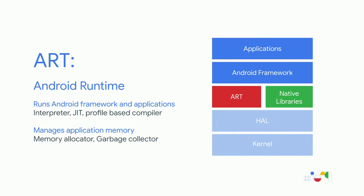ART is the software layer in between the Android operating system and the applications. It provides an execution environment for running both Kotlin and Java language applications on Android. ART does two things: it processes DEX files, the internal format of Android applications, through a hybrid model consisting of interpretation, just-in-time compilation, and profile-based ahead-of-time compilation. ART also manages memory through a concurrent compacting garbage collector introduced in Android Oreo.